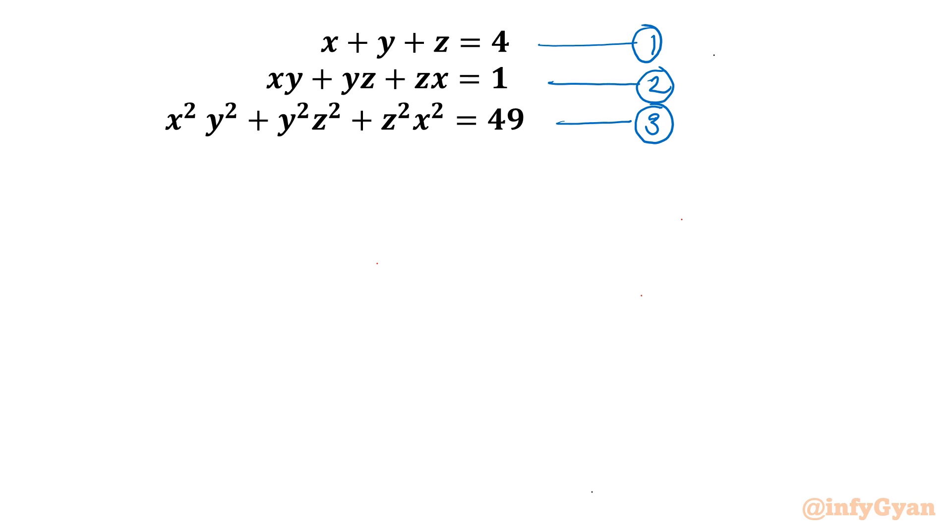Now if we think about one cubic equation whose roots are x, y, and z, then we need to know three terms: first, the sum of roots, which we know as equation number 1; second, sum of roots taken two at a time, which is known. The only term missing is xyz, the product of roots. So my target is to find out xyz.